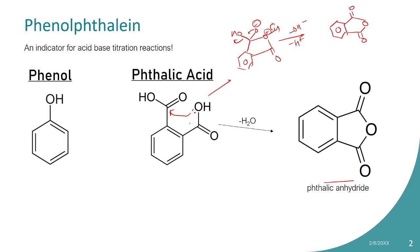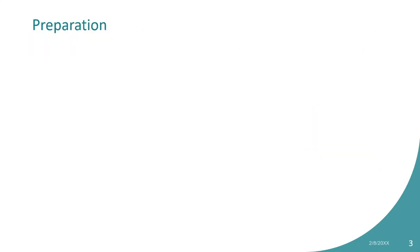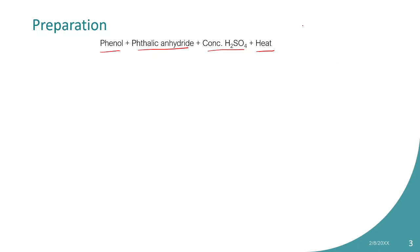Now let's see the preparation of phenolphthalein. We know the connection: phenol and phthalic anhydride are the key components. The preparation is very easy — you just mix phthalic anhydride and phenol in an acidic medium with concentrated H₂SO₄ and heat it, and you can form phenolphthalein.